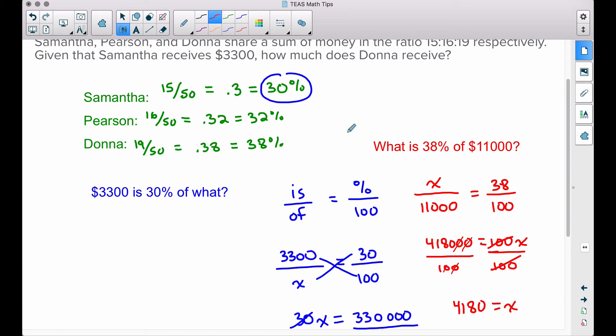Which is simply going to be 4180. That's going to be the value of x in this problem. That is going to be how much money Donna is going to get: $4,180. Now that is the solution to our problem, how much does Donna receive? We figured that out right there.